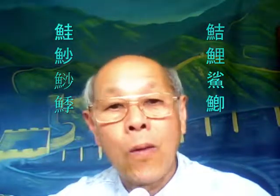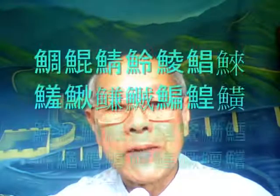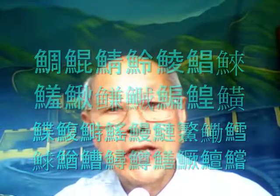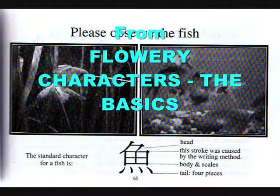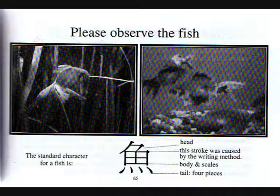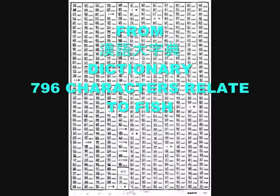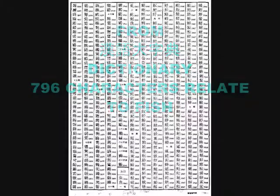Now you are able to recognize over 700 species of fish in Chinese characters. Here are examples — each of these is a species of fish. Thank you.